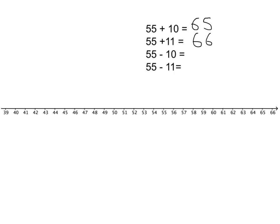And then we have 55 minus 10 that we know will take us to 45 and if we had to do minus 11 well we've taken our jump from 55 down to 45 that's 10 down and we need to go one more down so we'll get 44.